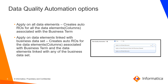The next option is apply on data elements linked with business data set. This option creates auto ROs for the data elements which are associated with the business term and also tagged to a business data set — both conditions must be satisfied. Data elements can be associated with any of the data sets.